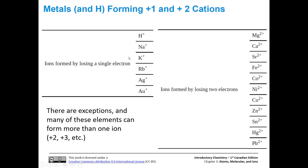Let's talk about plus one and plus two cations. Here are some ions formed by losing a single electron — they're all plus one. These generally are plus one, and you can count on that for normal circumstances. Some of these can have variable charge, so keep that in mind.